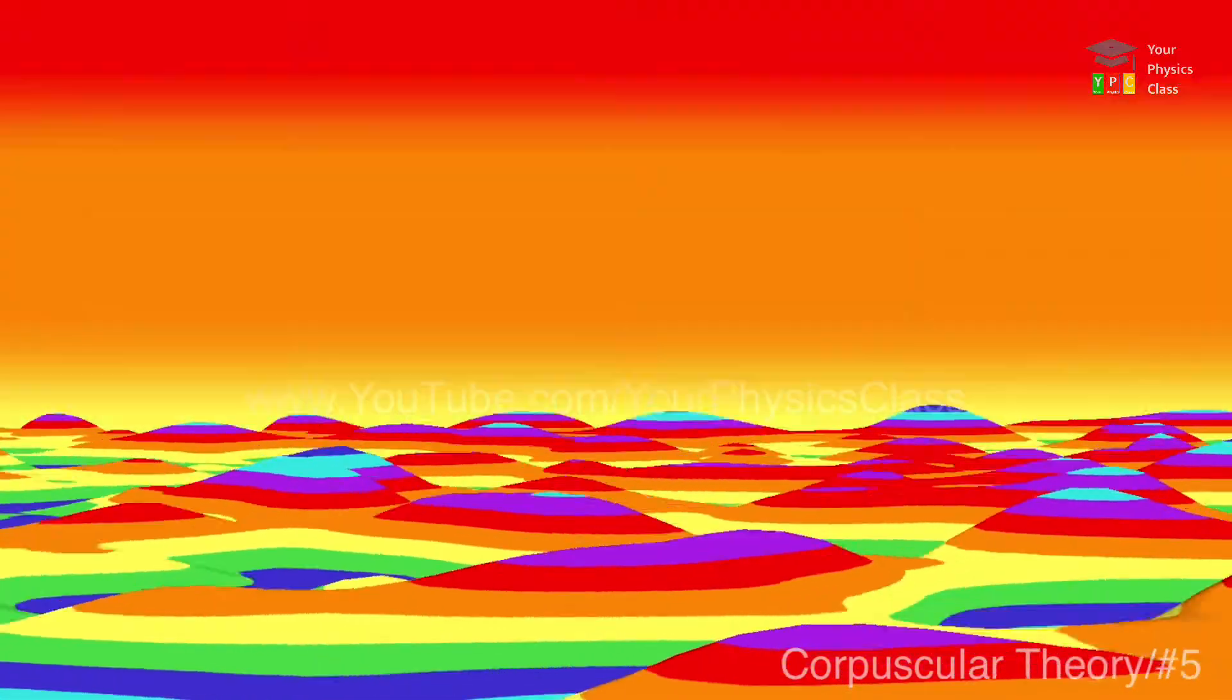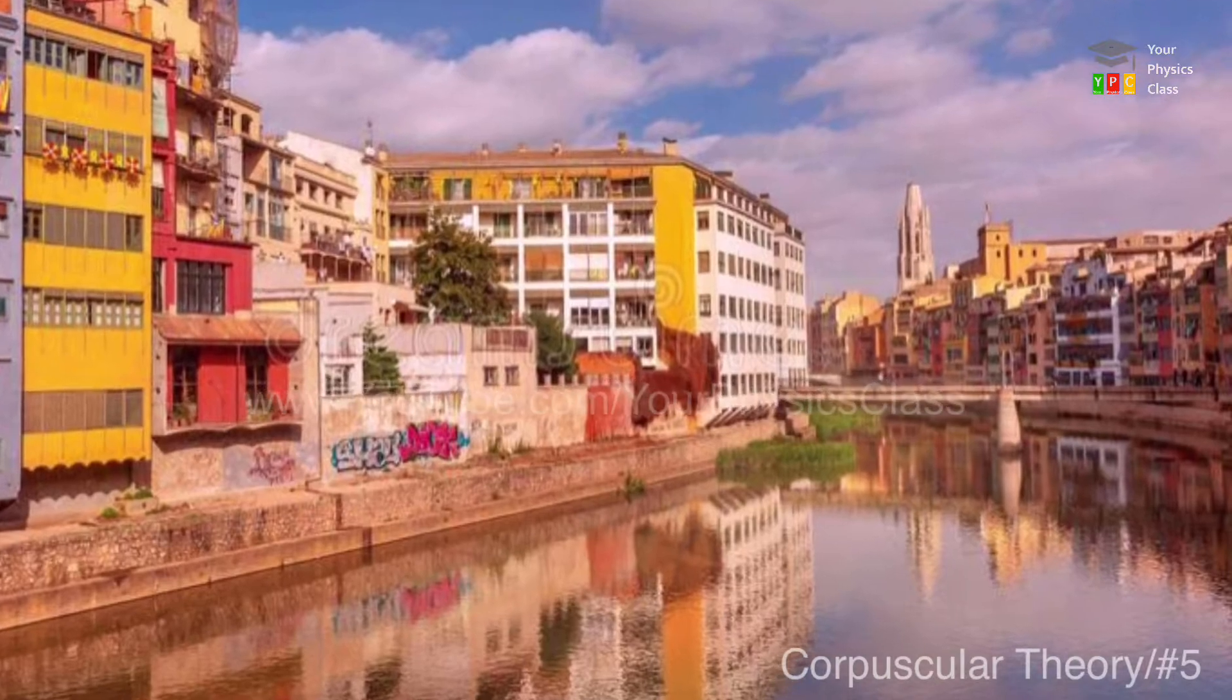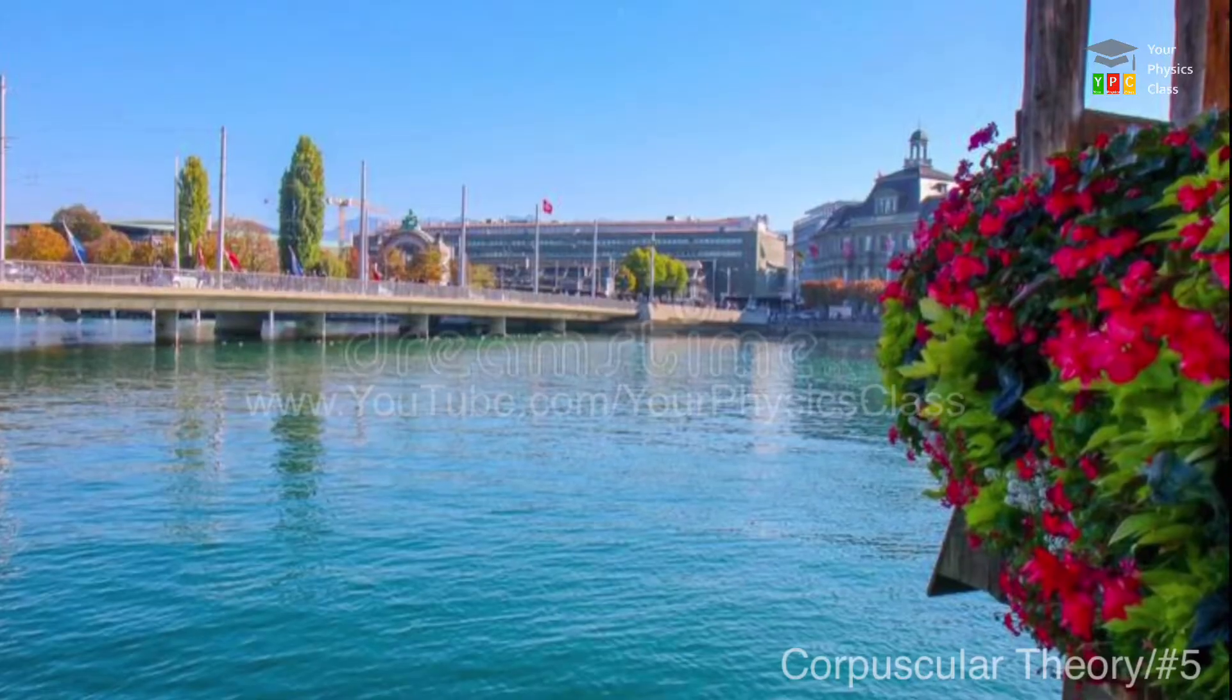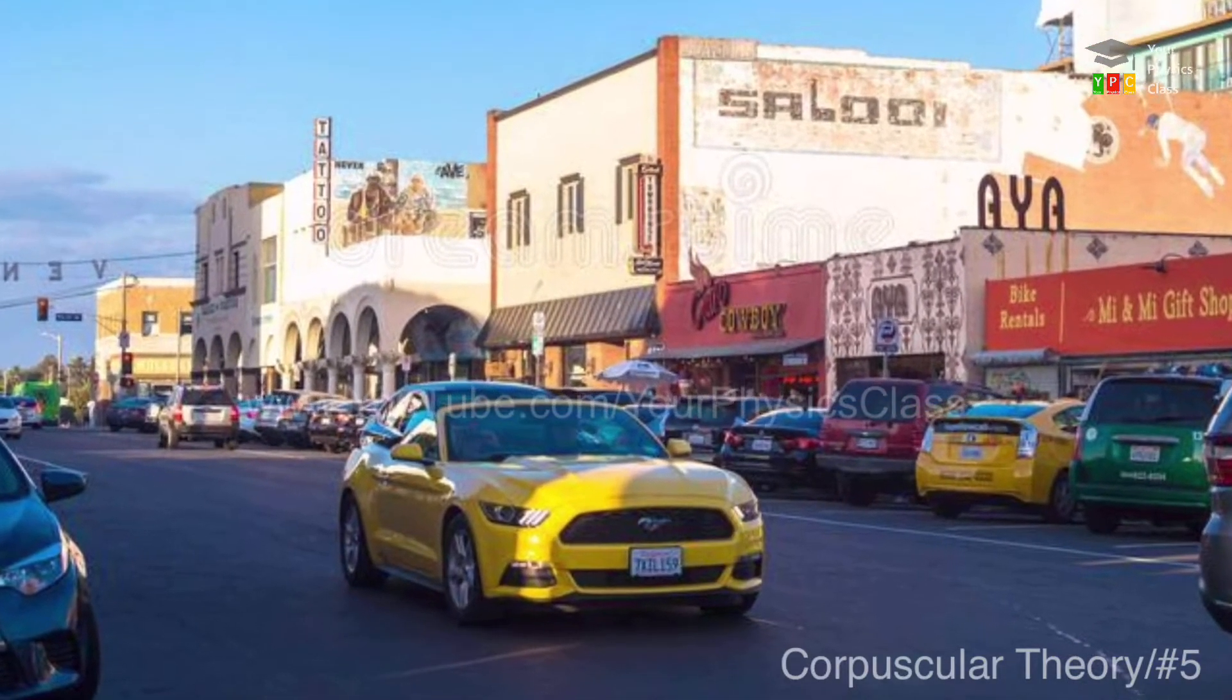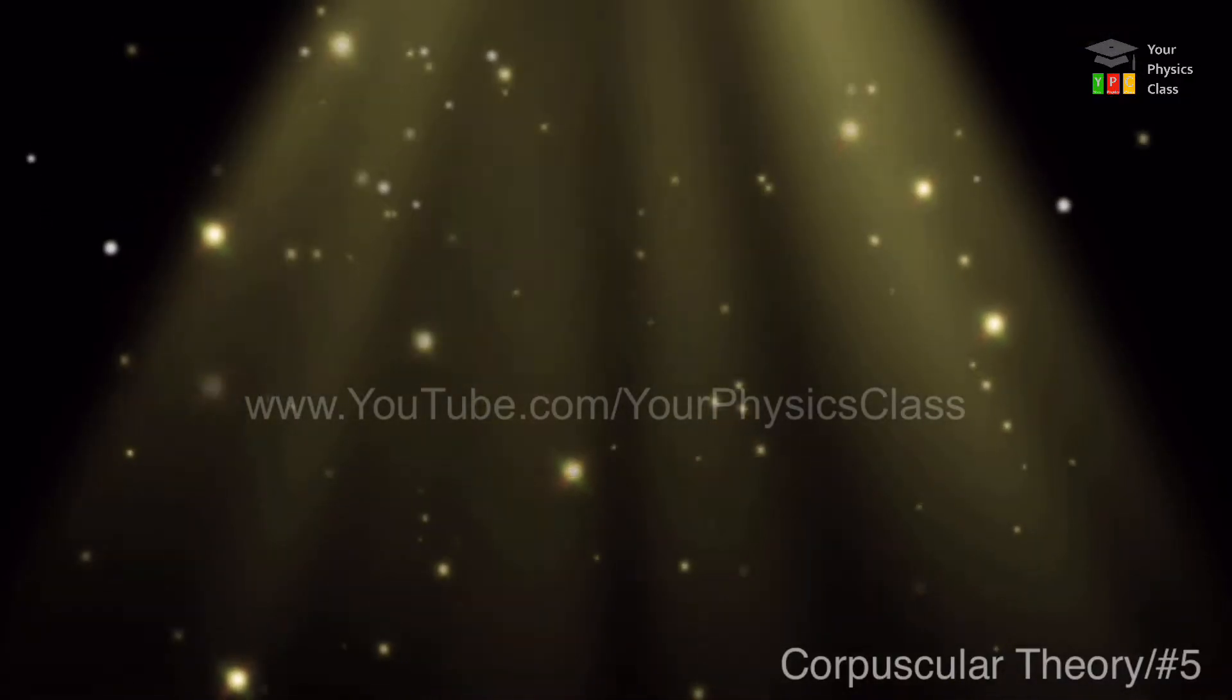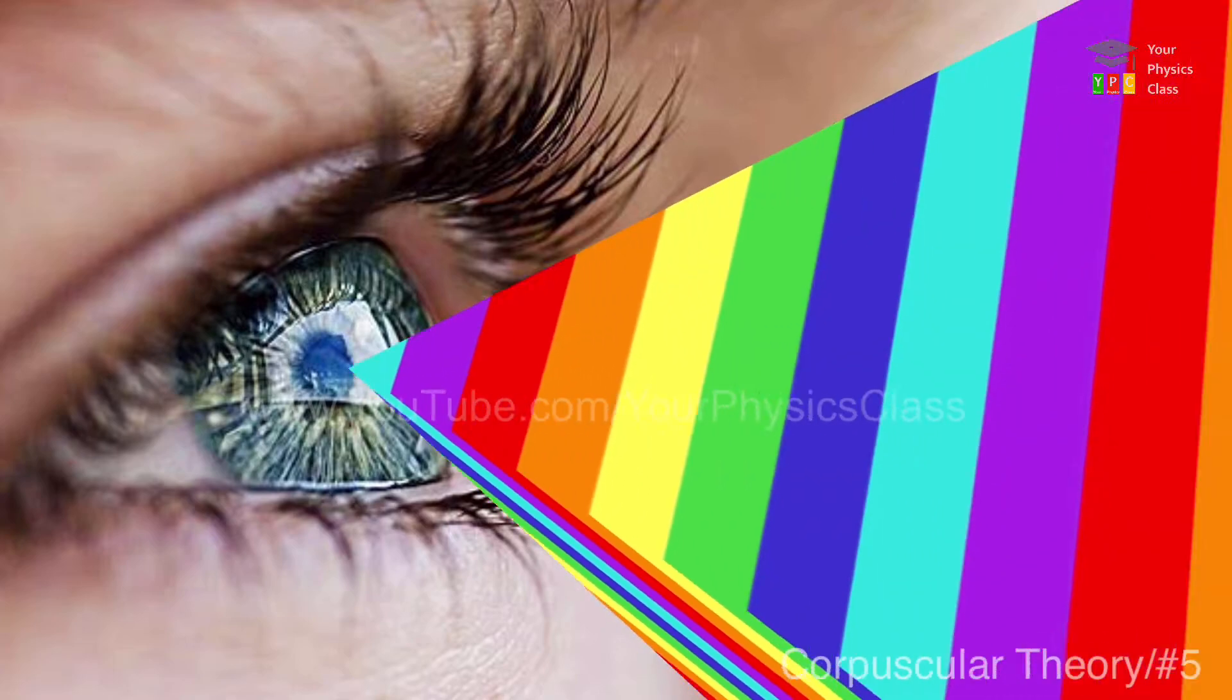As per the theory, different colors of light are due to different size of corpuscular. We see colorful world around us with different colors. These colors of light are due to different size of corpuscular. Whatever colors we see in our surrounding, behind this is the size of corpuscular. Whichever size of corpuscle produces sensation in our eyes, that color appears to us.